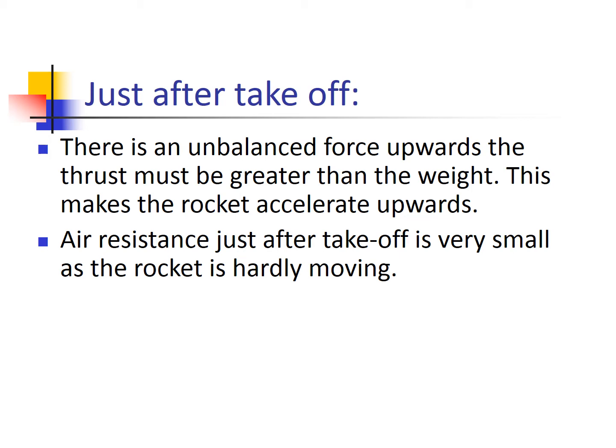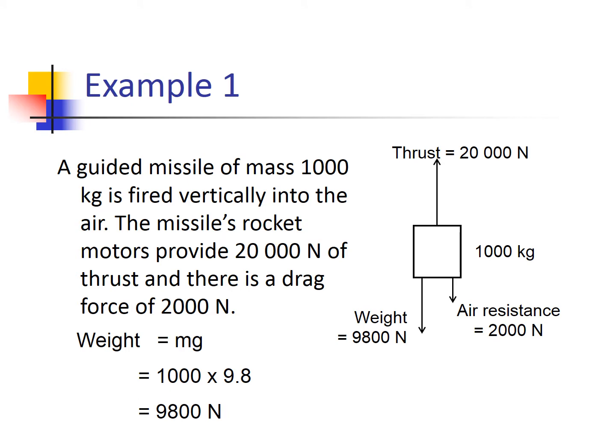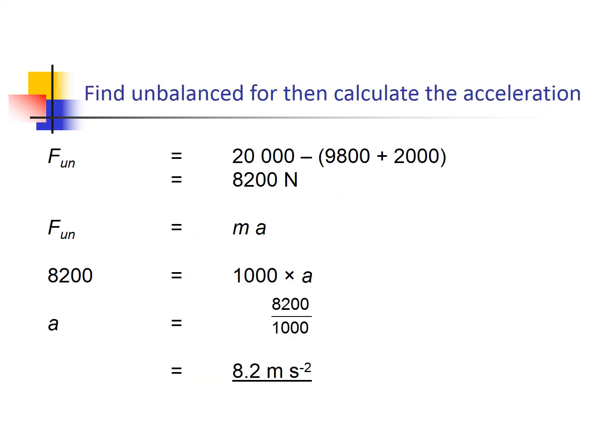If we know the thrust and the mass of the rocket, we can calculate the acceleration using Newton's second law. Here's an example: a missile of mass 1000 kilograms fired into the air. We're given the thrust and the drag or air resistance. Here's my free body diagram. I can work out the weight to add to my diagram, then work out the acceleration by calculating the unbalanced force: thrust take away the drag and the weight.